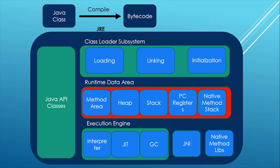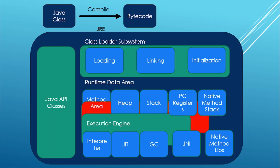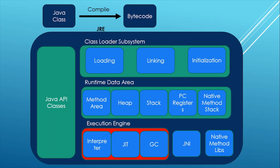The next component is the Execution Engine, which also has three different components. First is the Interpreter — it is responsible for reading and executing the program; it reads the source program and translates source code instruction by instruction. Next we have the JIT Compiler, a component of JRE that improves the performance of Java applications at runtime. Then we have Garbage Collection, which is also a component of the execution engine.